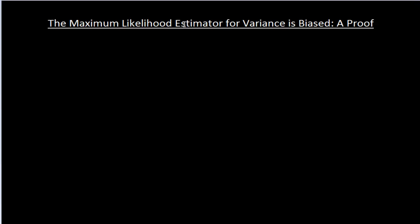So this is one of my favorite calculations. There are several really nice calculations in this class; I think this is one of the best ones. This is the calculation that's taking up the bottom of page 58 and all of page 59 in the text. I'm going to run through that calculation again. The title of this is: the Maximum Likelihood Estimator for Variance is Biased, and we're going to give a proof of that. We saw that in an example in the previous video, and I just want to remind you that the maximum likelihood estimator for variance is a sample variance.